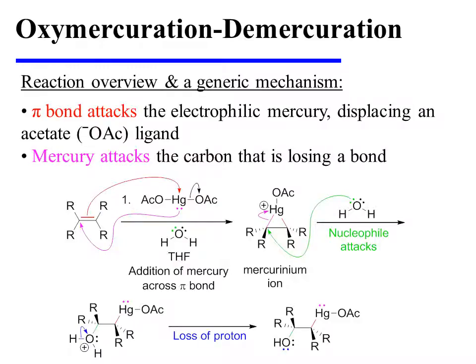The mechanism for this first step begins with the formation of the mercurinium ion, which entails three mechanistic arrows. The first shows the pi bond attacking the mercury. The second shows the loss of an acetate ligand. The third shows that mercury simultaneously adds to the carbon of the alkene that would otherwise have lost a bond. The net result is the formation of a three-membered ring involving mercury, in which the mercury bears a formal positive charge — hence the name mercurinium ion.